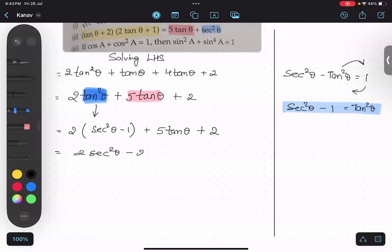2 sec² θ minus 2 plus 5 tan θ plus 2. This 2, this 2 getting cancelled.